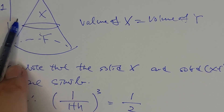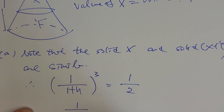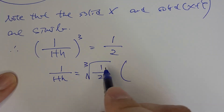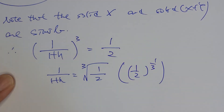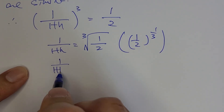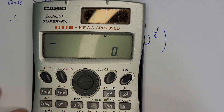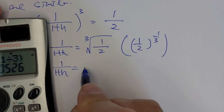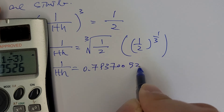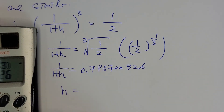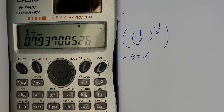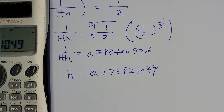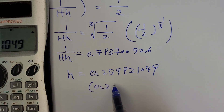Since the volumes are equal, volume of X to volume of (X plus Y) is 1 to 2. The cube of the length ratio equals the volume ratio, so (1 over (1 plus h)) cubed equals 1 over 2. Therefore 1 over (1 plus h) equals (1/2) to the power of one-third, which is approximately 0.7937. Solving, h equals 1 divided by 0.7937 minus 1, giving h approximately 0.260.